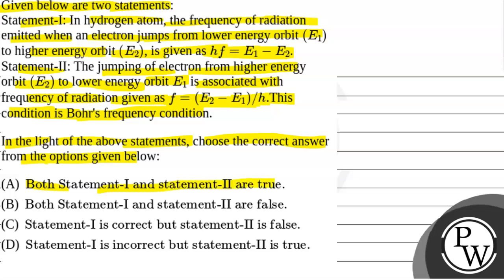The options are: both Statement 1 and Statement 2 are true; both Statement 1 and Statement 2 are false; Statement 1 is correct but Statement 2 is false; Statement 1 is incorrect but Statement 2 is true.